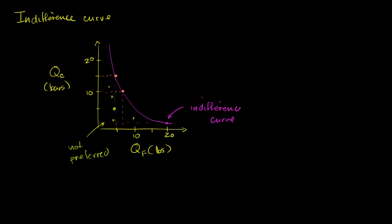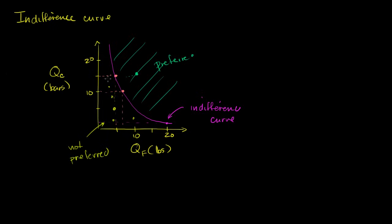Using the same logic, anything out here above the curve — well, we're neutral between all the points on the curve, but this point out here has the same number of bars as a point on the curve but a lot more pounds of fruit — about 11 or 12 pounds. Assuming I'm getting marginal benefit from those incremental pounds of fruit, anything out here is going to be preferred. So this whole area is preferred to everything on the curve, and everything below is not preferred.